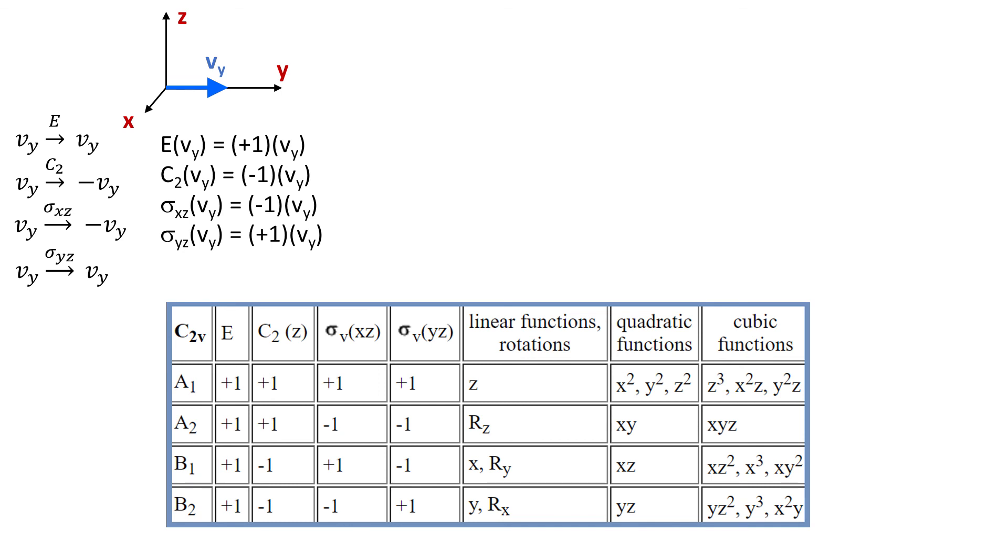The reason why these matrices are so small is because in this video we did examples where the vectors or orbitals transformed into themselves, 1, or in the negative of themselves, minus 1. This is characteristic of A and B representations. In the next video we will do E and T representations, which have slightly bigger matrices.